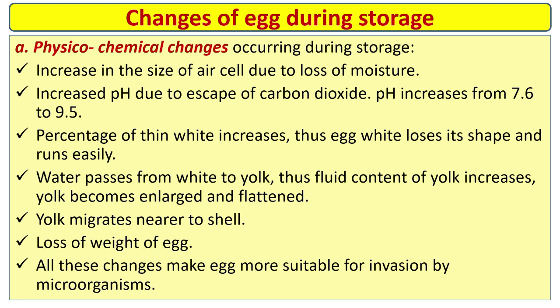Percentage of thin white increases, thus egg white loses its shape and runs easily. Water passes from white to yolk, so fluid content of yolk increases and yolk becomes enlarged and flattened. Yolk migrates nearer to shell. Loss of weight of egg — all these changes make the egg more suitable for invasion by microorganisms.